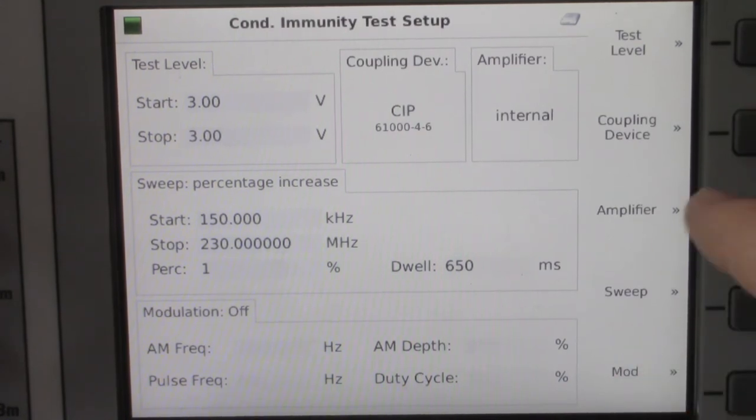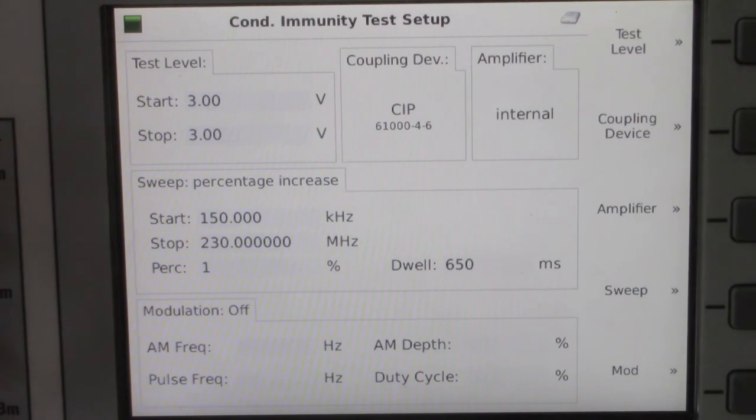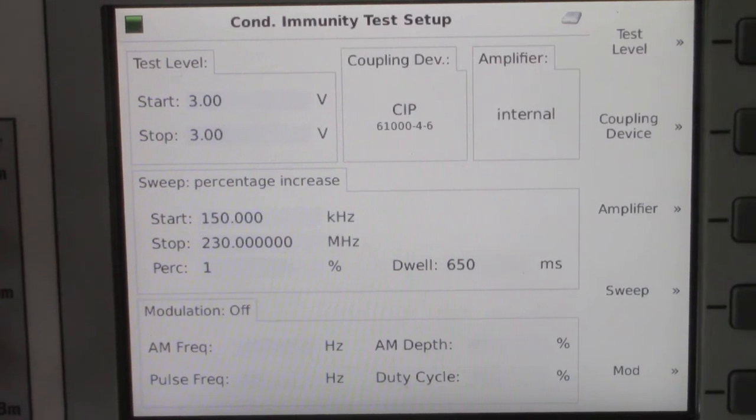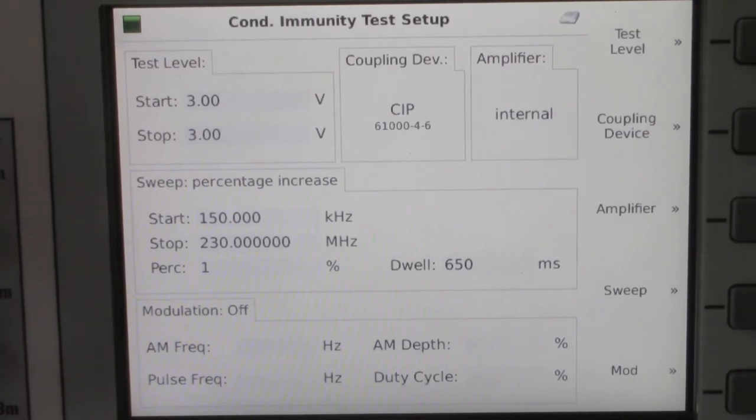One more thing to be aware of is the amplifier right here. It says internal. Right now we're using the 80 watt amplifier from 150 kilohertz to 230 megahertz, which is built inside the TESEC NSG-4070.